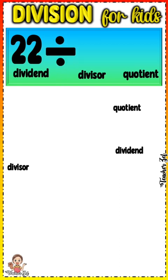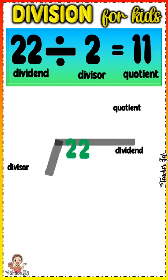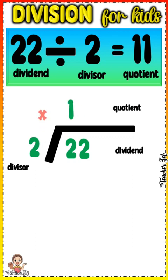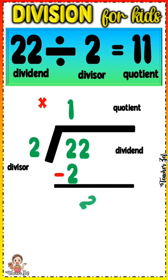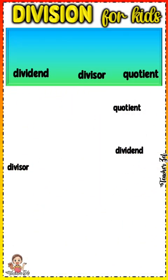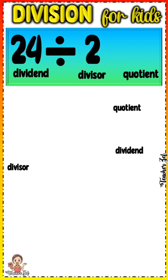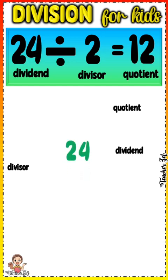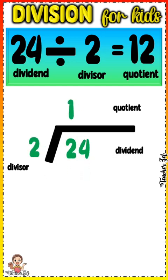22 divided by 2 equals 11. 2 divided by 2 equals 1. 1 times 2 equals 2. 2 minus 2 equals 0. Bring down 2. 2 divided by 2 equals 1. 1 times 2 equals 2. 2 minus 2 equals 0.